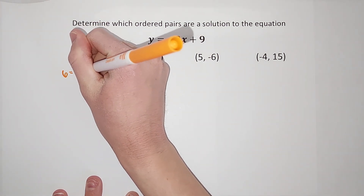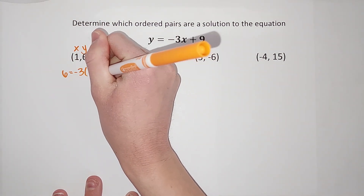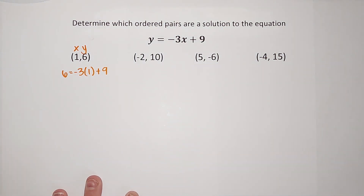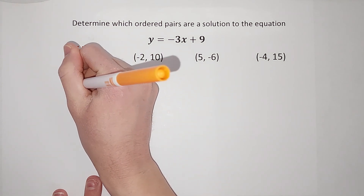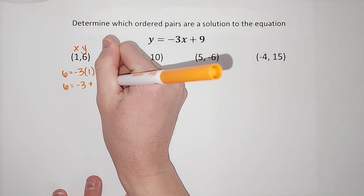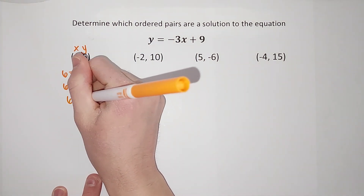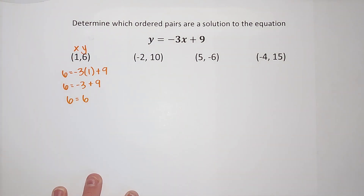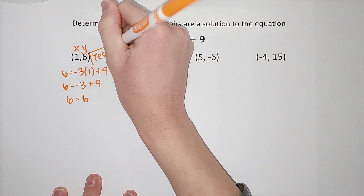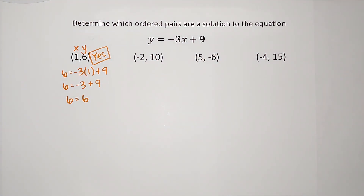Negative three times x — when numbers are written next to each other like that it means they're being multiplied — so negative three times x, and we're seeing if x can be one, plus nine. Order of operations tells me to multiply first, so negative three times one gives me negative three, plus nine. Negative three plus nine gives me six, so I end up with six equals six, which is true. So yes, this ordered pair is a solution for this equation.